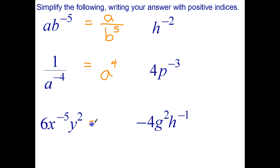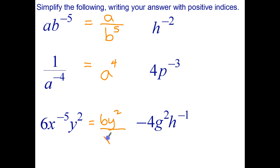With this last one, I've got a 6 on top and a y squared on top, because neither of those is raised to a negative power. And the x to the negative 5 goes to the denominator, but that becomes x to the positive 5. Okay, stop the video and try the remaining three questions.